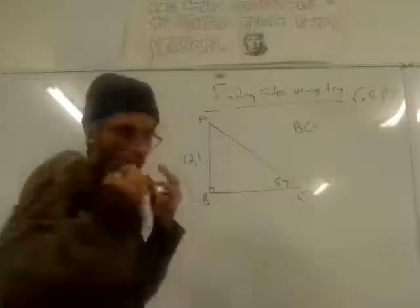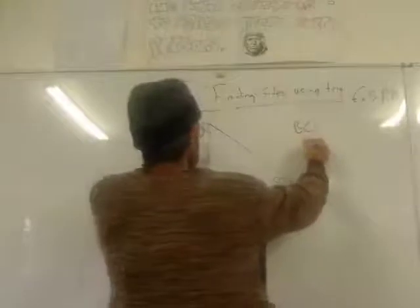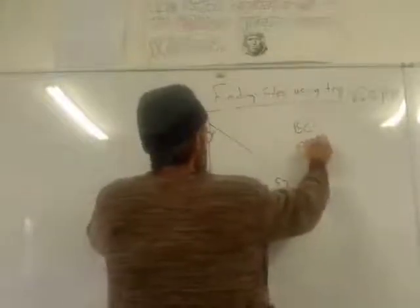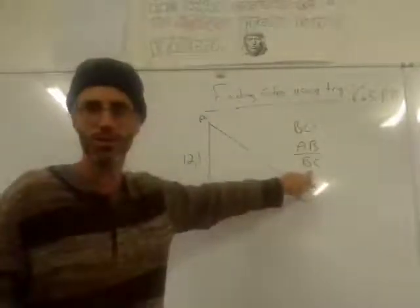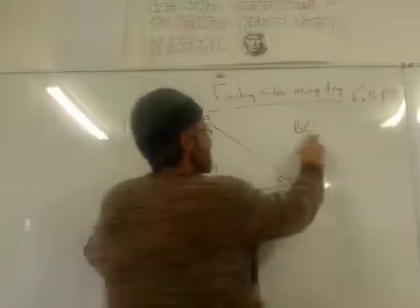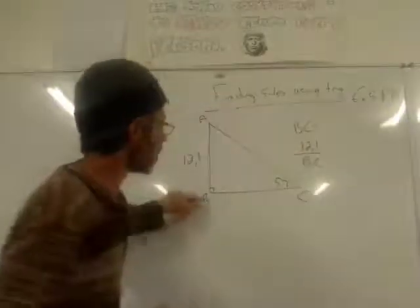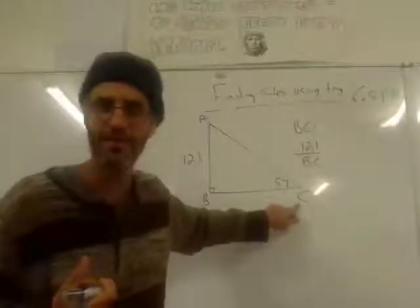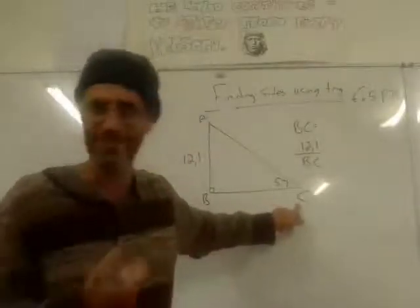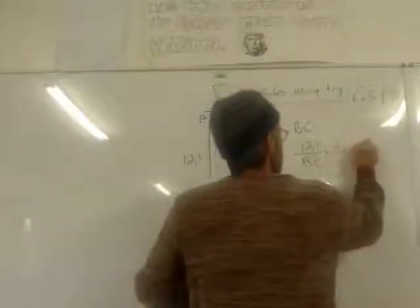So what I would do personally, I would say let's have a look at AB divided by BC. BC is what I want to know. AB, I already know. What is AB? It's 12.1. So 12.1 divided by BC. It's not sine 57, it's not cosine 57, it is tan 57.